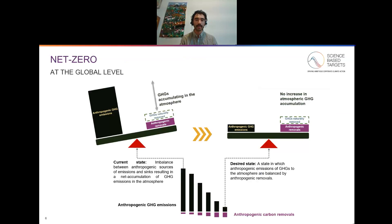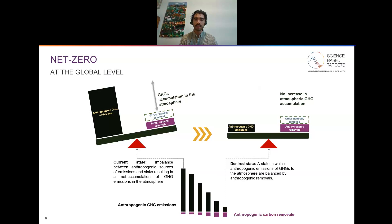To simplify this picture, we can look at net zero at the global level and what that entails. In our current state, we are seeing anthropogenic greenhouse gas emissions that far outweigh the carbon removals occurring from the atmosphere. To reach net zero at the global level, we need to reach a state in which anthropogenic emissions do not accumulate in the atmosphere at all, and that can be achieved by reducing our emissions very near zero and removing any unabated emissions through carbon dioxide removal.